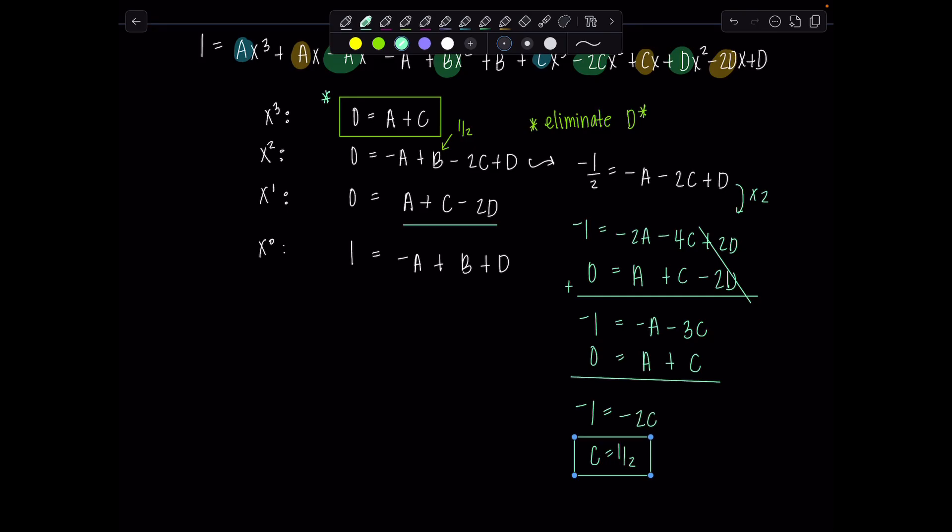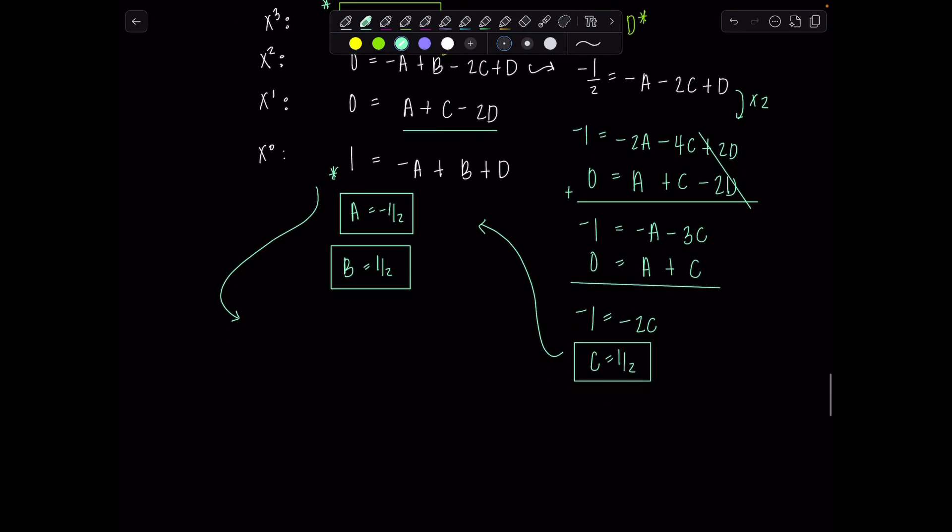So c is a half. Love it. If c is a half and a plus c is 0, then that tells me, that's right, a is negative 1 half. Very good. And then don't forget, we already know b is a half. So then all that's left is to find d. Let's do that from this last equation. Why not? It's been neglected. 1 equals negative a, which would be positive half, plus b, which is a half, plus d. So this is 1. So d must be 0. And we are done.